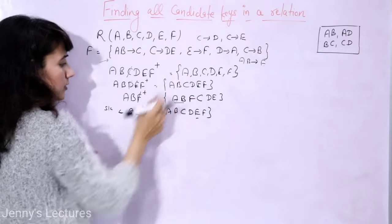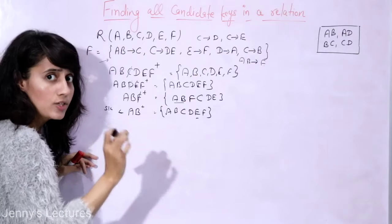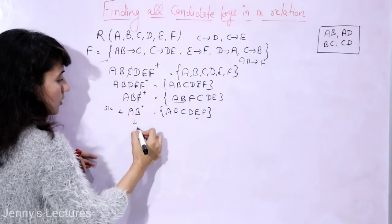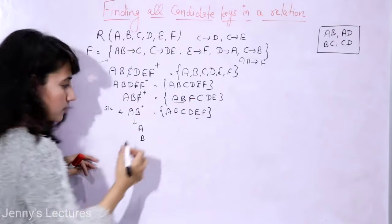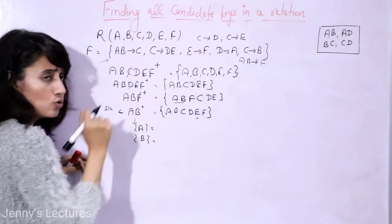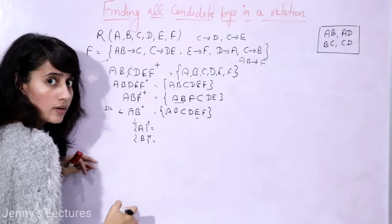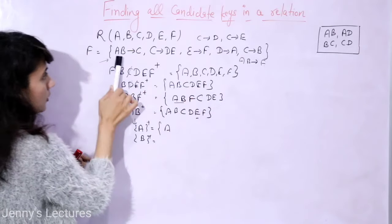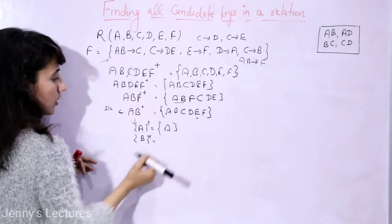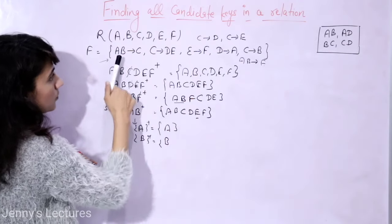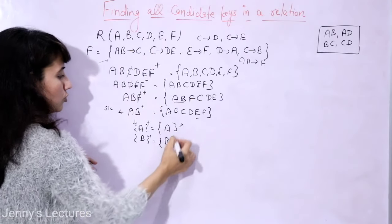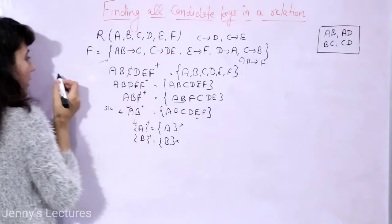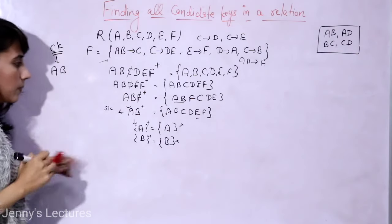Now you cannot discard anything further, so A, B is a super key. Check if it is a candidate key by finding all proper subsets of {A, B}: these are {A} and {B}. Attribute closure of {A}: only A, because A, B together determine C but we only have A alone. Attribute closure of {B}: only B. Neither is a super key, so no proper subset of {A, B} is a super key. Therefore A, B is a candidate key.